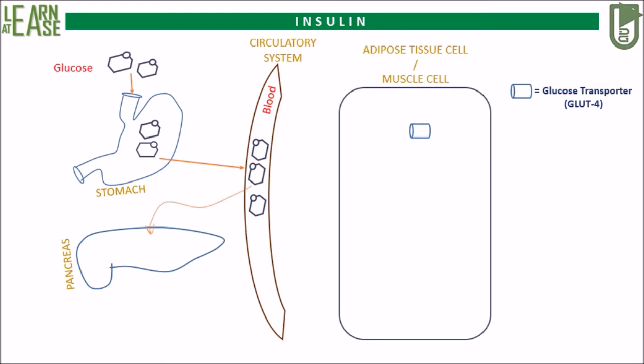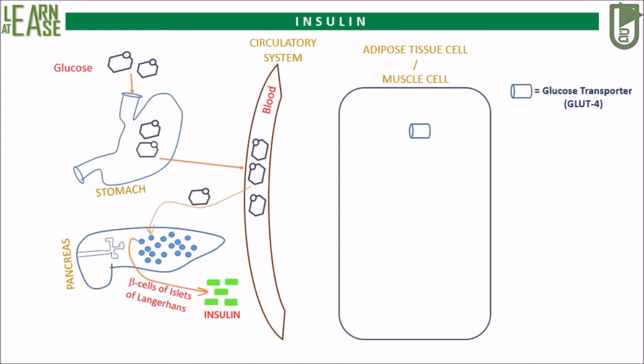The pancreas is an exocrine as well as endocrine organ. The narrow tail part of the pancreas is endocrine in nature as it possesses islets of Langerhans. The beta cells residing in the islets of Langerhans will quickly respond to the glucose rush in blood and will produce insulin.